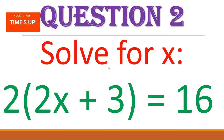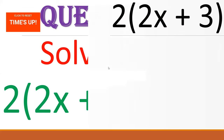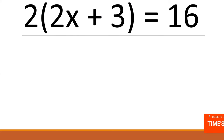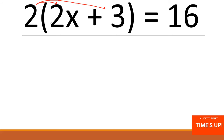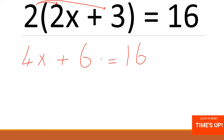Your time is up — it is my turn. Let's try together. Step 1: multiply this 2 by 2X and by 3. 2 times 2X gives us 4X. And 2 times 3 is 6. So we have 4X plus 6 equals 16. From now it is just like Question 1.